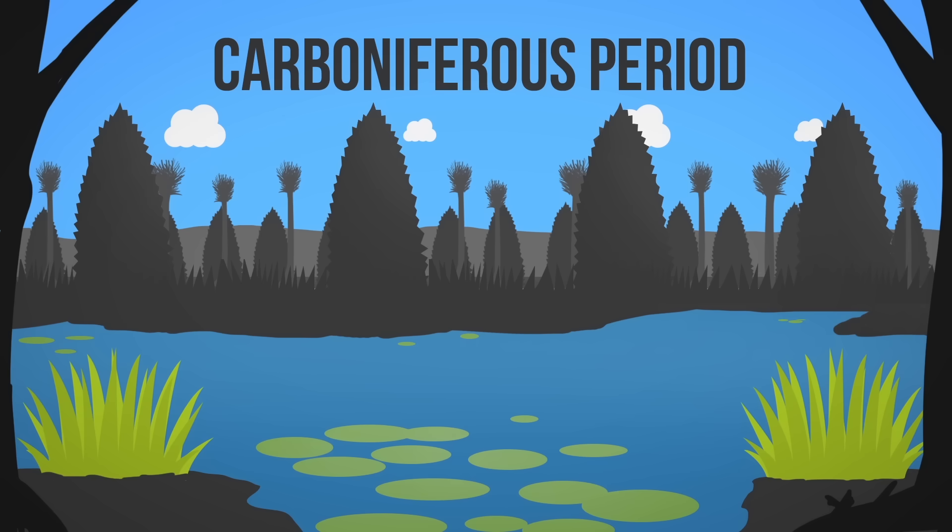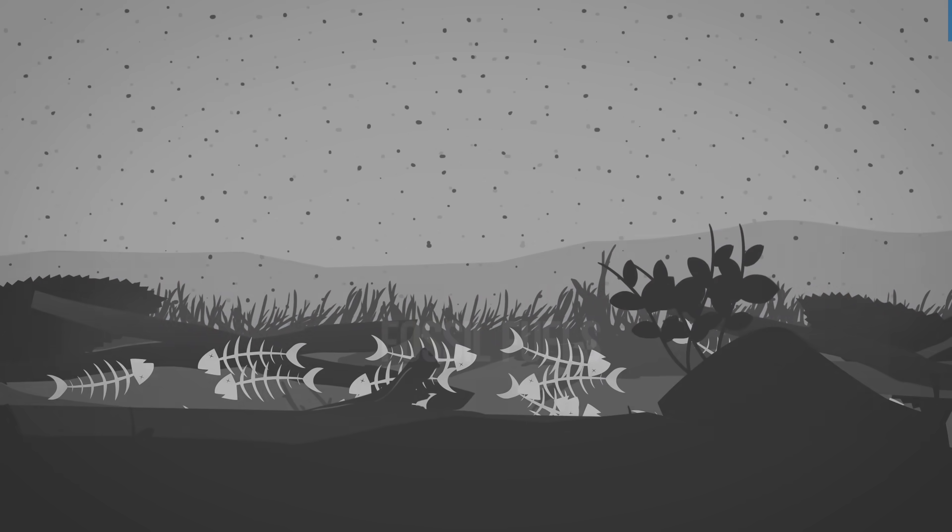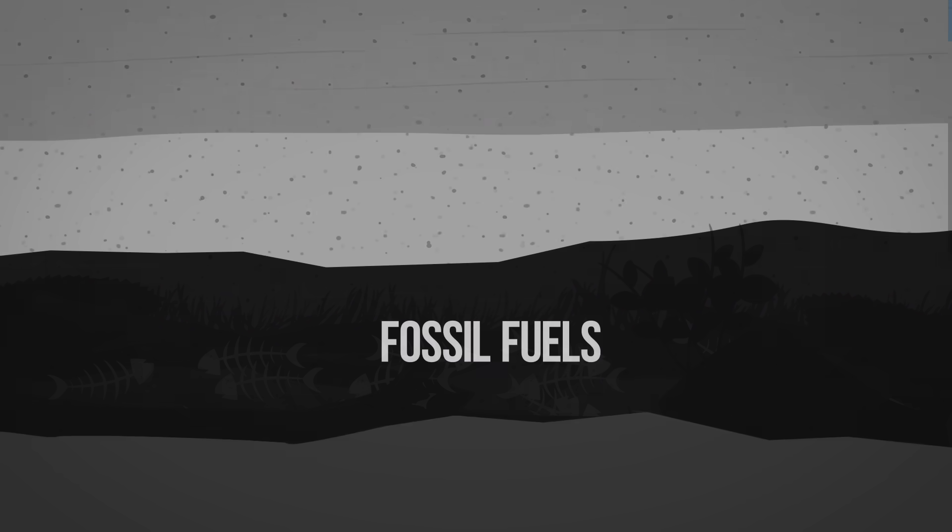At that time, the land was covered with swamps filled with organisms and plants. As they died, they sank to the bottom of swamps and oceans and over millions of years started decomposing under layers of sand, clay, and other minerals.